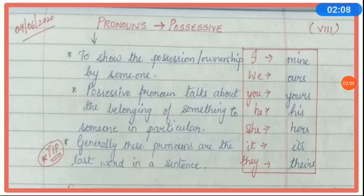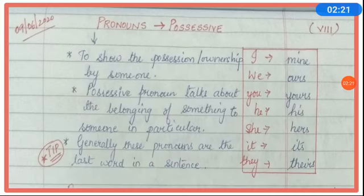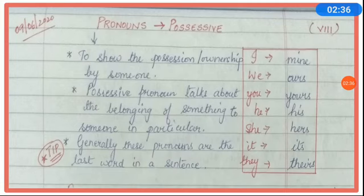Here I have given a small table where I have given the subjective pronoun and the possessive pronoun for the subject. Suppose the toy I have is my own toy, so how will I say? I have a toy — it is mine. We live in this house — this house is ours. For the subject pronoun 'you', the possessive pronoun will be 'yours'. He — it is his. She — hers. It — its. They — theirs.